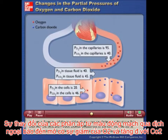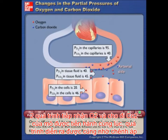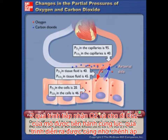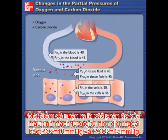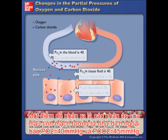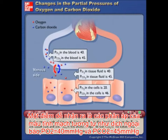Oxygen diffuses out of the arterial ends of tissue capillaries into the tissue fluid, then into the cells, and carbon dioxide diffuses out of the cells into the tissue fluid, then into the blood because of differences in partial pressures. At the venous ends of tissue capillaries, the pO2 in the blood is equal to the pO2 in the tissue fluid, and the pCO2 in the blood is equal to the pCO2 in the tissue fluid, resulting in no more net movement of oxygen or carbon dioxide.